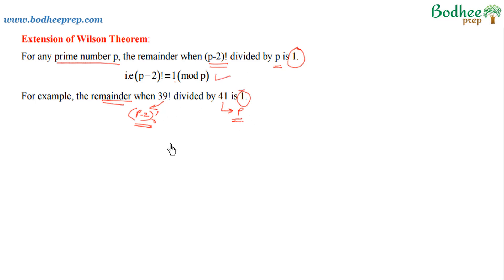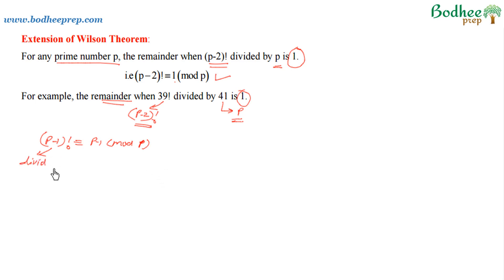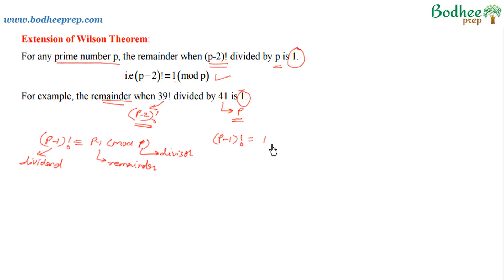This relation can be proved using Wilson's theorem. From Wilson's theorem, we know that for any prime number p, (p-1)! ≡ (p-1) (mod p). So the dividend is (p-1)!, the remainder is (p-1), and p is the divisor. We can write (p-1)! = p·q + (p-1), where q is the quotient when (p-1)! is divided by p.